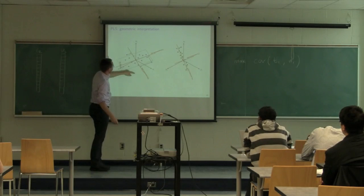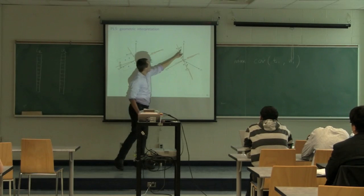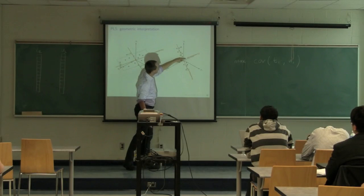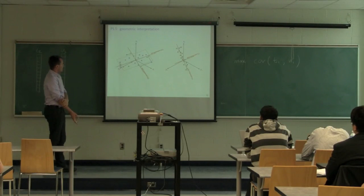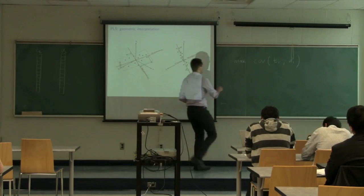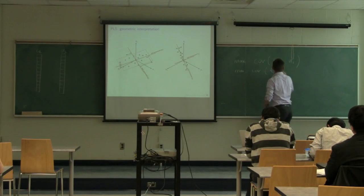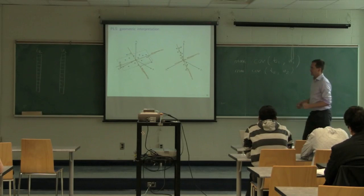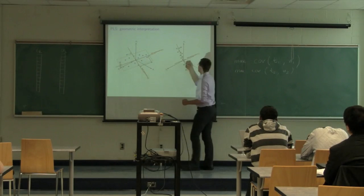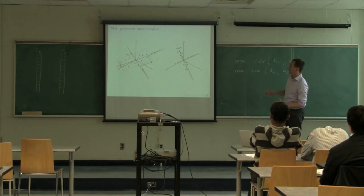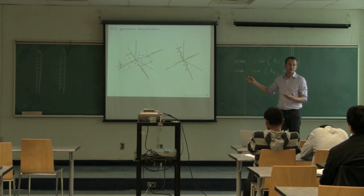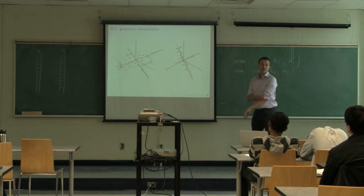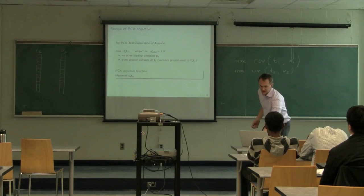The third component goes in exactly the same way — W3 in the X space, C3 in the Y space. For a three-variable illustration you can't fit more than three components, but in general we have more columns in X so we can keep adding. That's the geometric explanation for PLS.